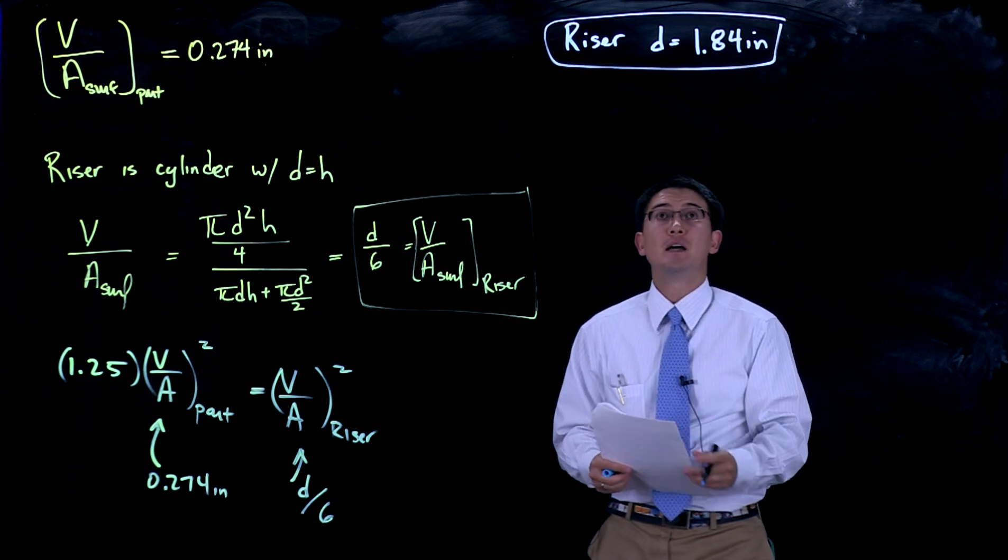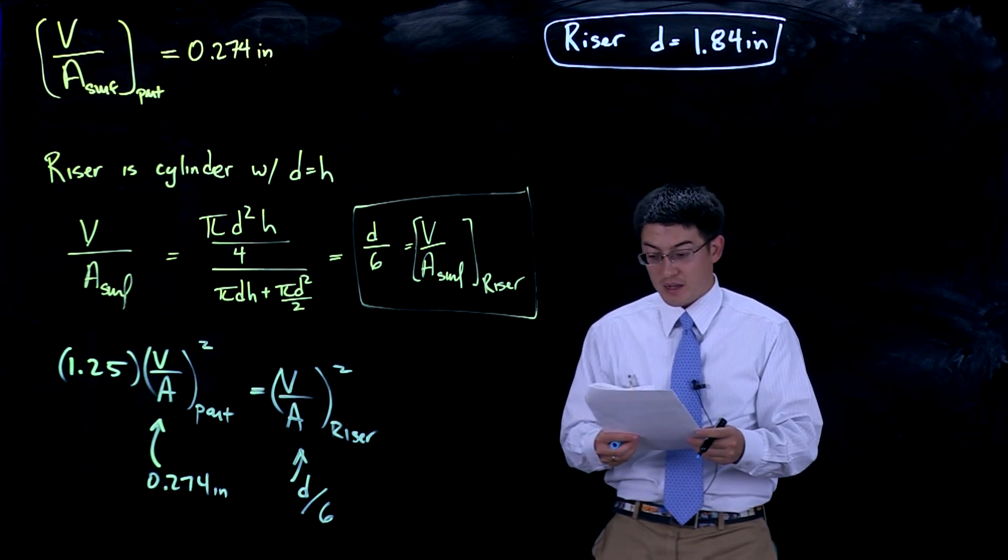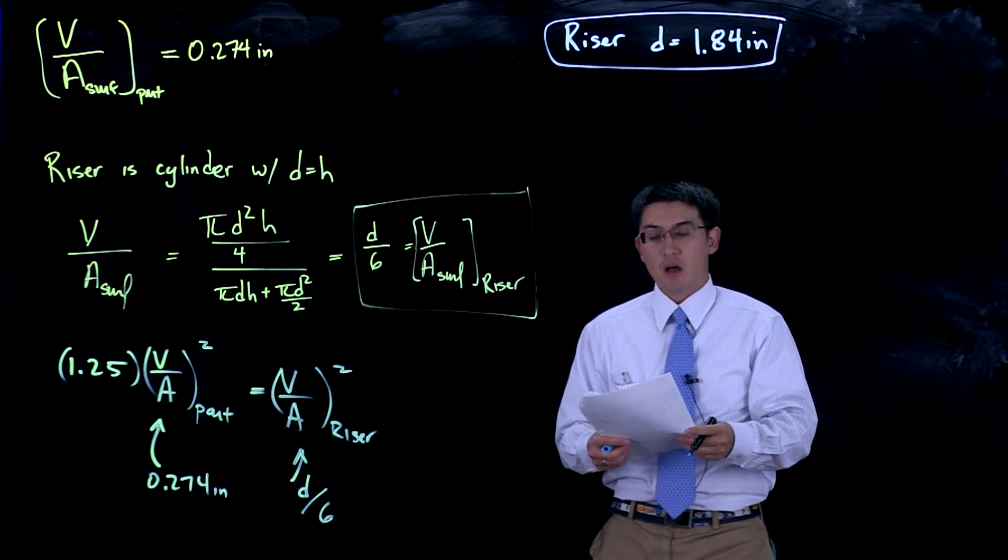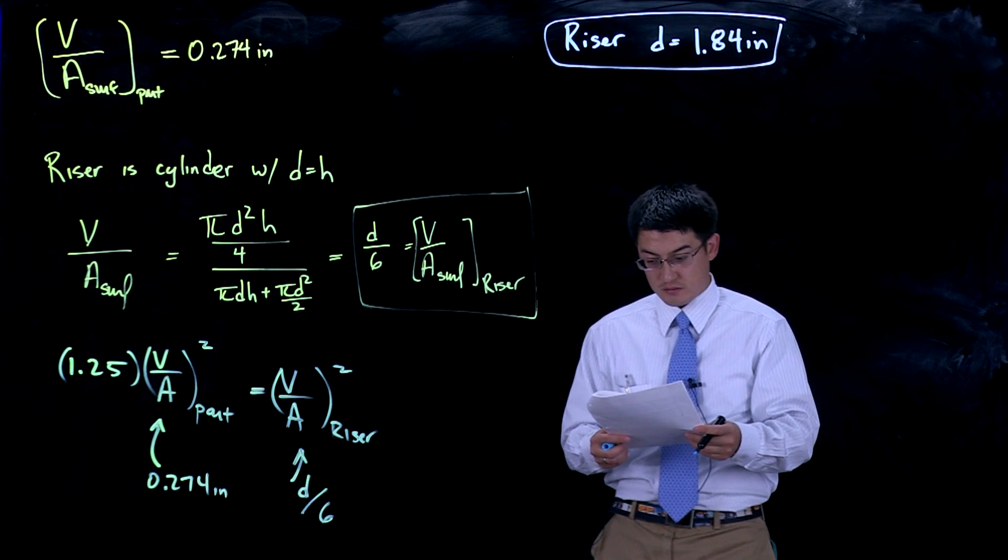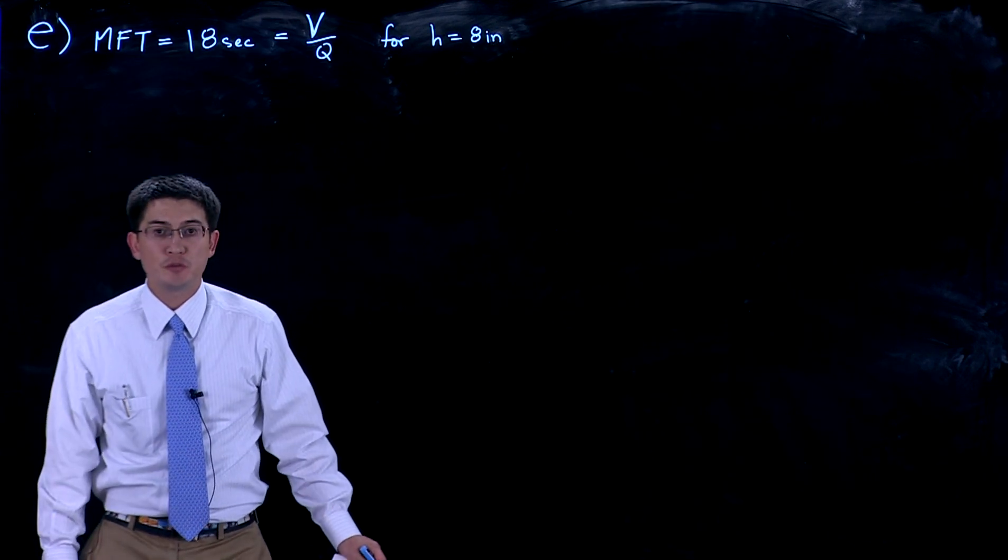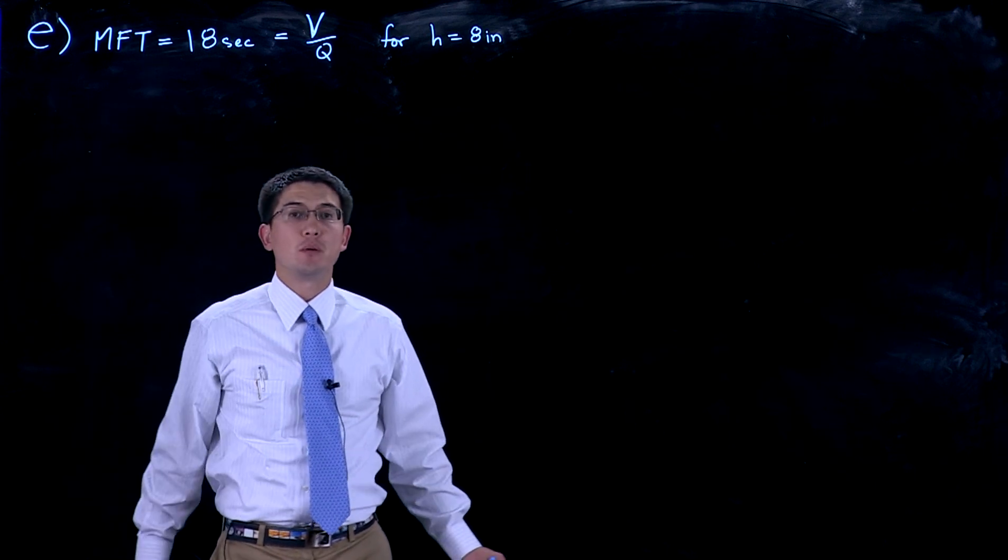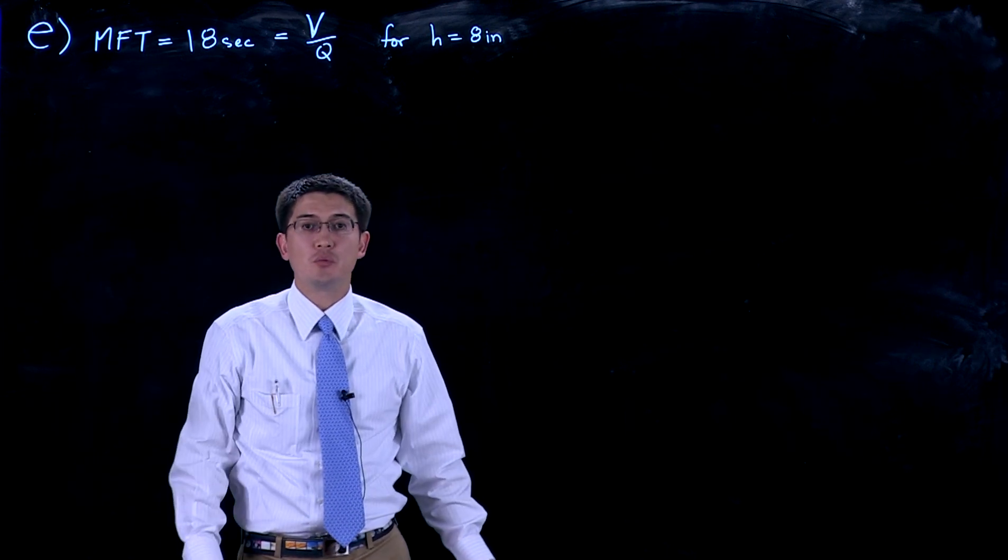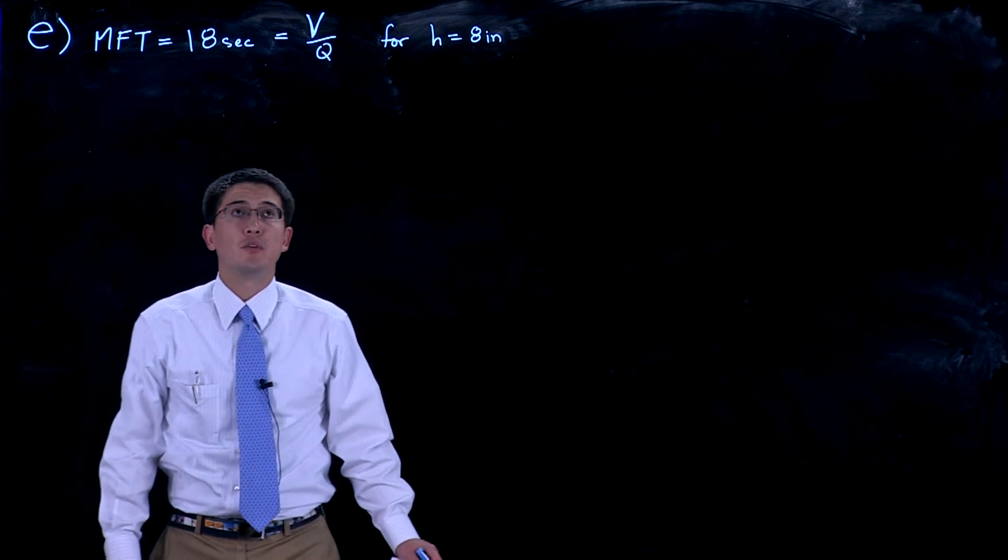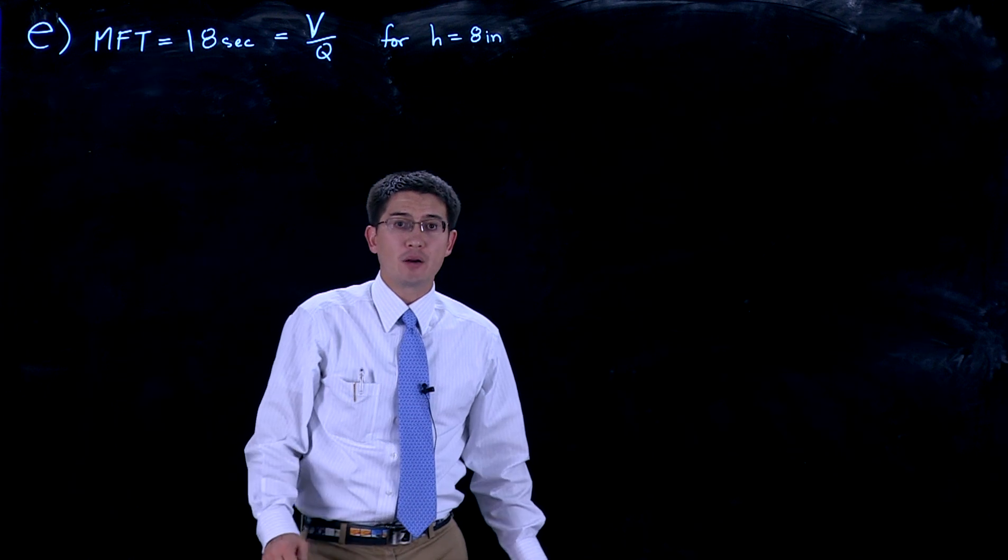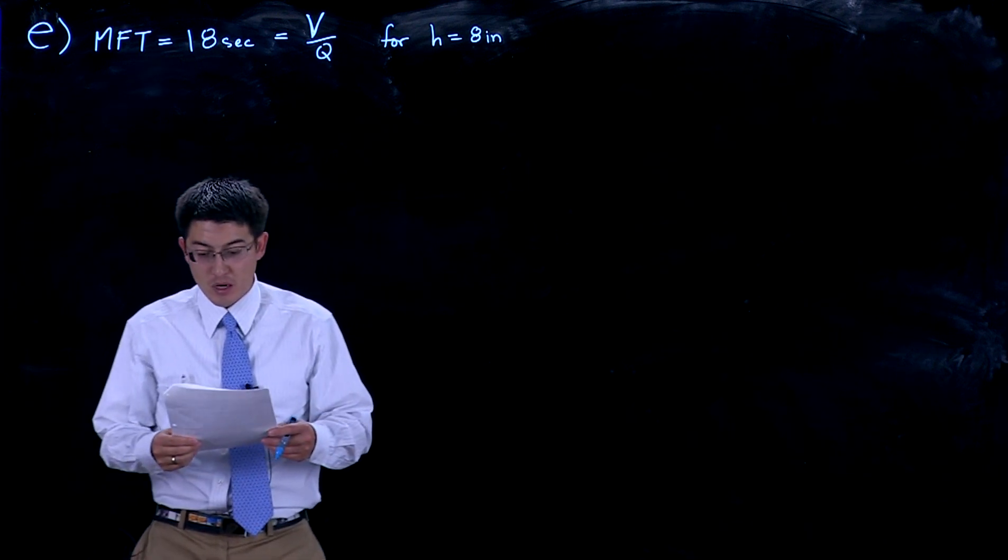Part e asks us for the size of the sprue exit area given a height of 8 inches. This is part e which talks about the mold filling time. We want this to be about 18 seconds. Now this is going to come down to the volume that we're filling over the volumetric flow rate Q. We know that we have a sprue of about 8 inches, which is all given in the problem statement.